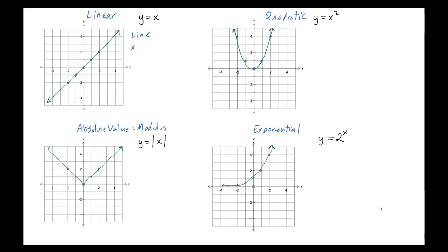A couple of things we want to look at are x-intercept and y-intercept. The x-intercept is the point where the line passes through the x-axis, and you can see it's passing through right there at (0, 0), so the x-intercept is (0, 0). The y-intercept is the point where the line passes through the y-axis, and again it passes through at (0, 0). Now the special feature of the linear graph is that it has a constant slope.